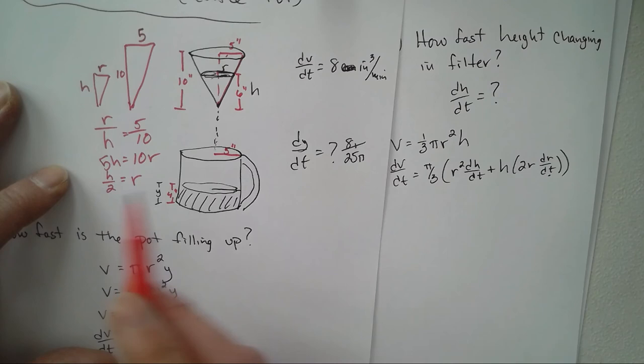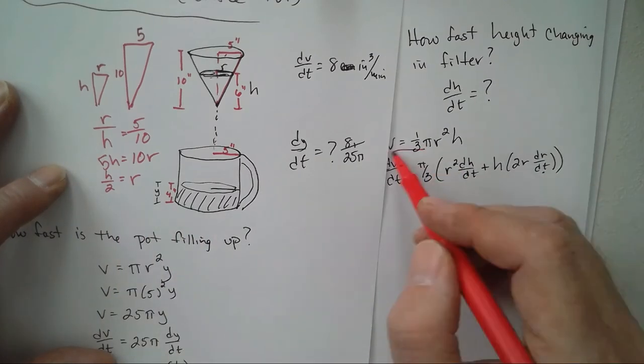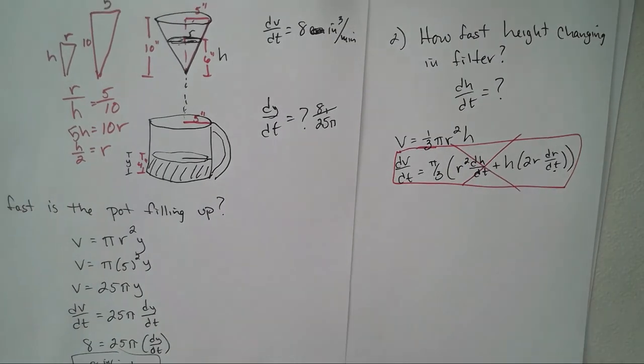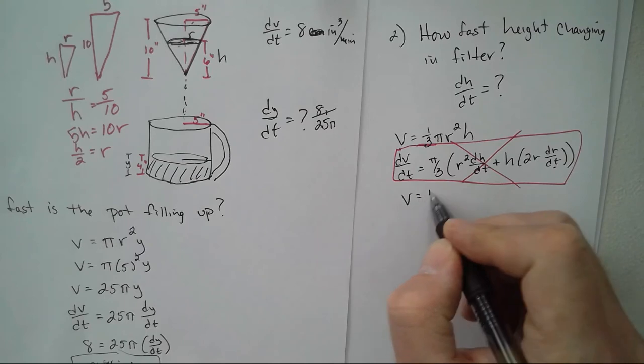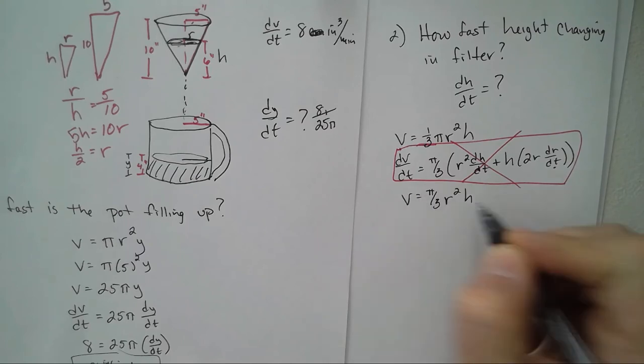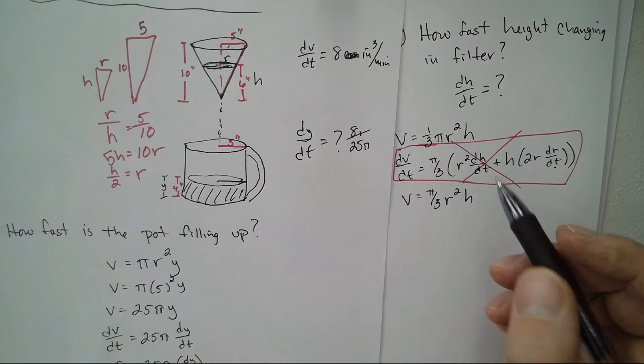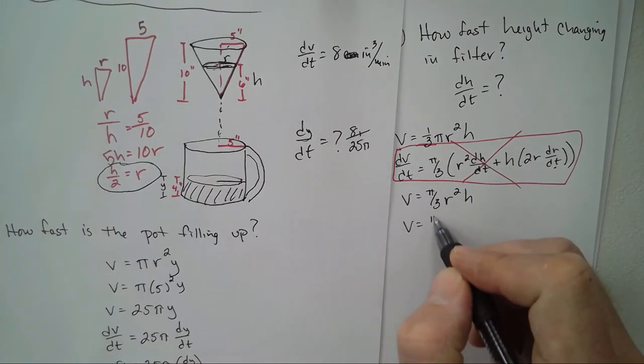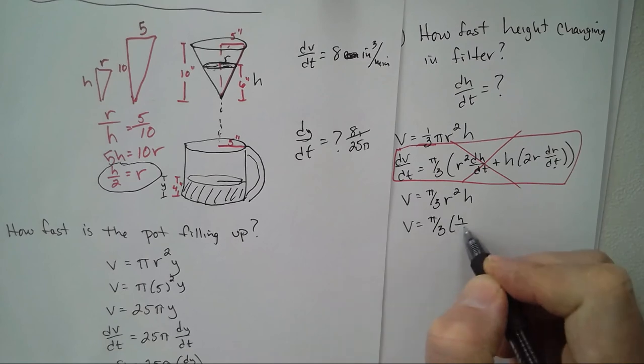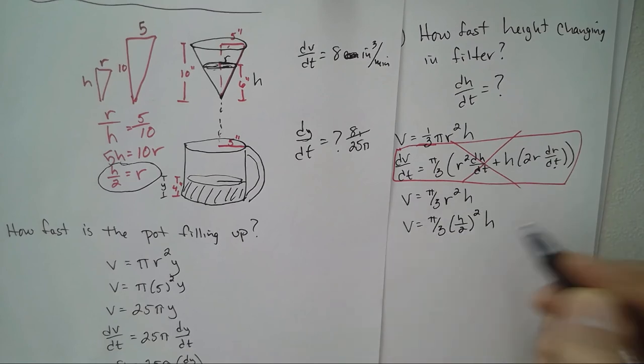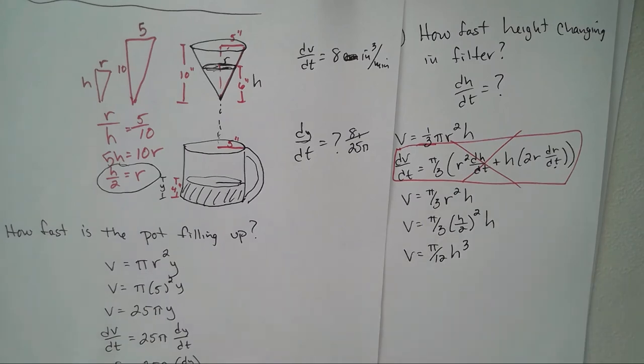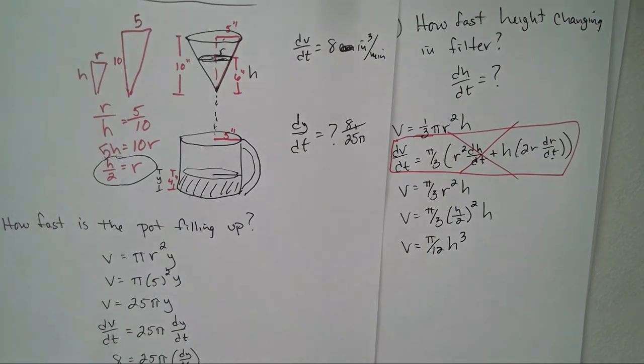So I can go back. This was not the right way to do it. We're going to go back to our volume equation. Volume equals π over 3 r²h, but now we know that r is h over 2. So π over 3 times (h over 2)² times h. So what do we have? π over 12 h³ is our equation.